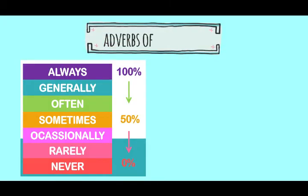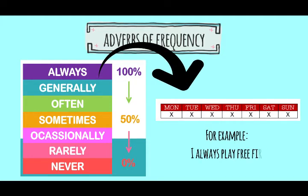Let's get to know them — conozcamos los adverbios de frecuencia. As you can see in the image, 'always' means siempre, and it's 100% — that is, every day we do this activity, like having breakfast: 'I always have breakfast.' Then we have: generally, often, sometimes, occasionally, rarely, and never — generalmente, a menudo, a veces, ocasionalmente, raramente, o nunca.